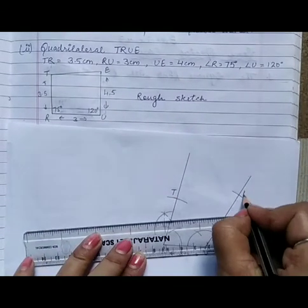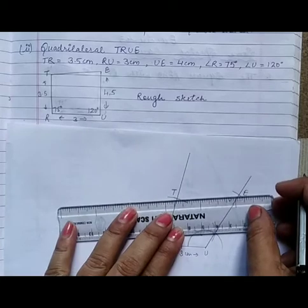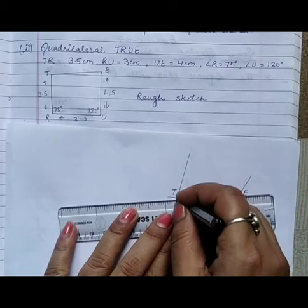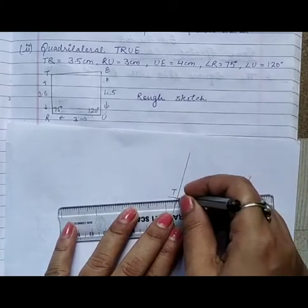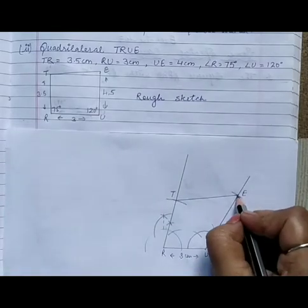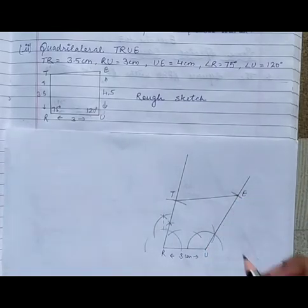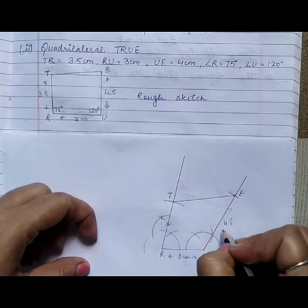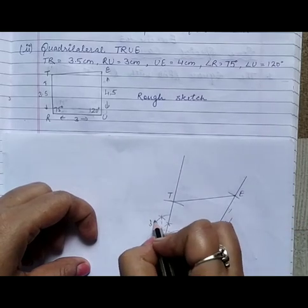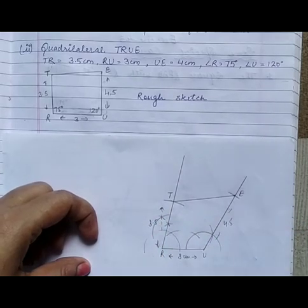This point is E. Now join T and E. This is the required quadrilateral TRUE.